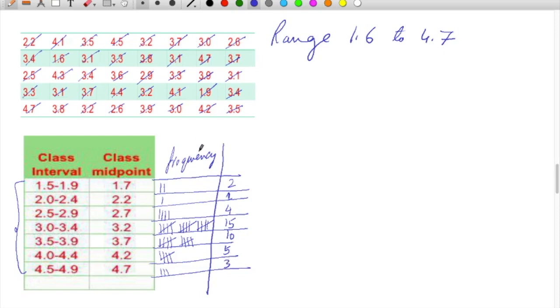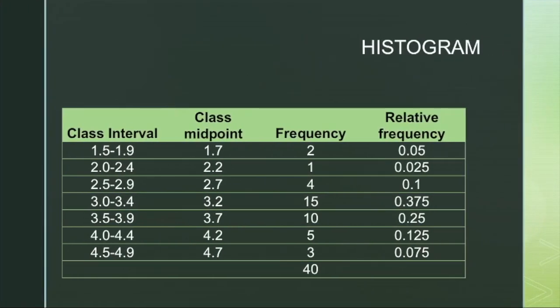So these are the frequency values for the occurrences in individual intervals. Now we can see that these are the frequency values. Here the total what we see over here is 40.